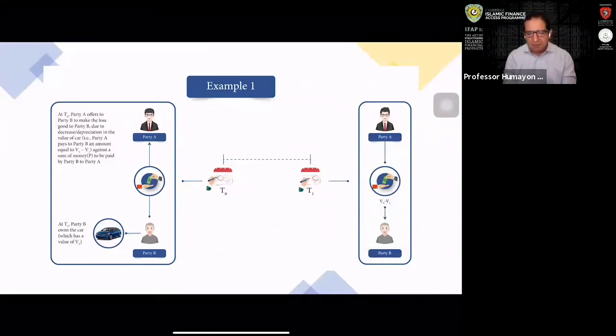In this example, we assume two time periods or two dates: T0, which is the present time, and T1, a future date. There are two parties, party A and party B.